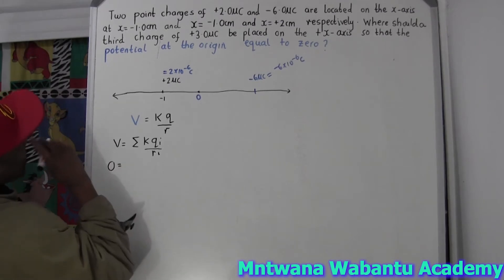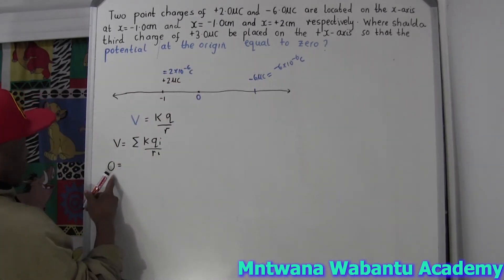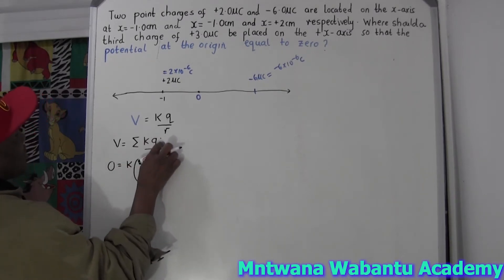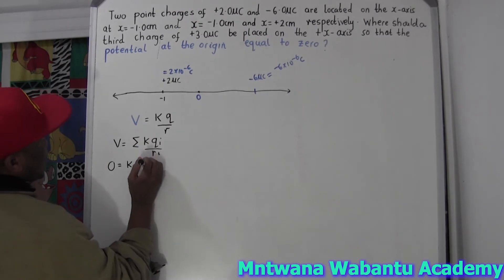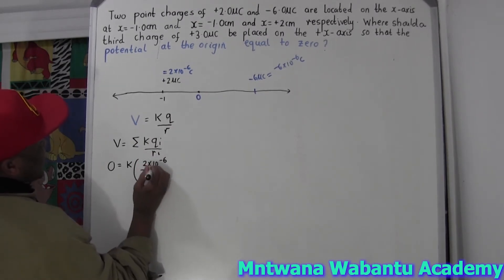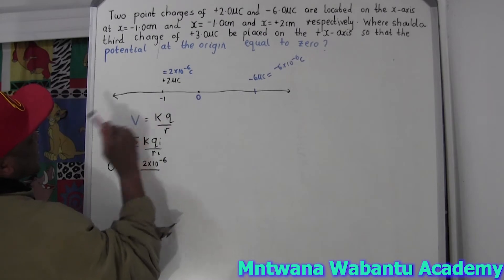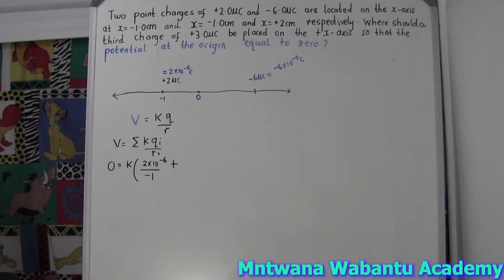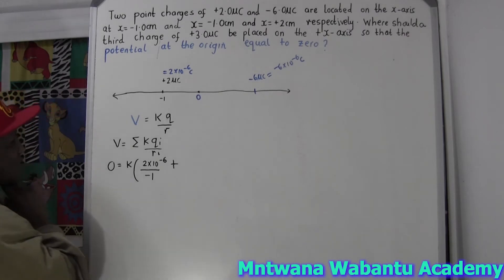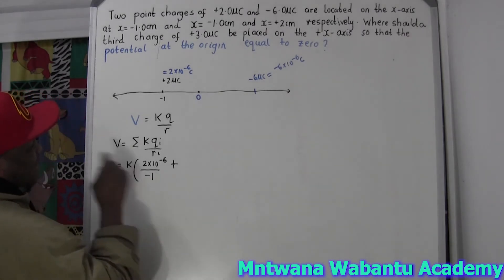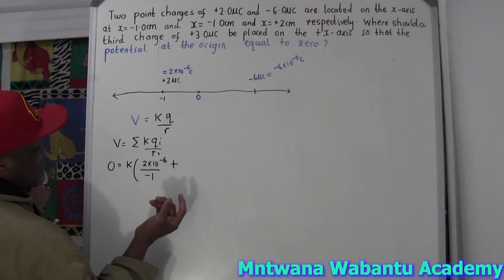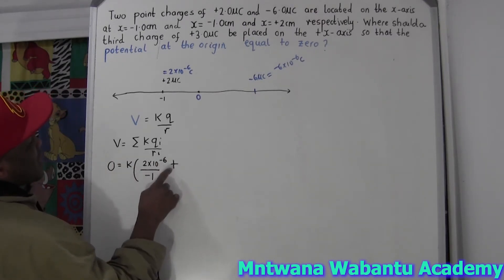This total potential is going to equal zero, according to the condition that the potential at the origin is zero. So zero equals k times the sum of each charge over its distance. k is a constant. For the first charge, we have two times ten to the negative six over the distance, which is one — so that's over negative one. Now we go for the second one.